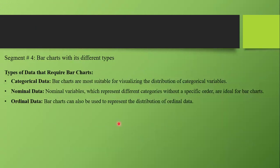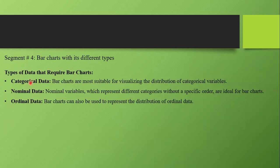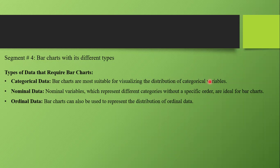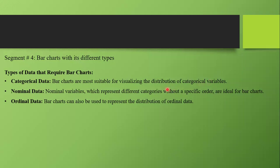Next is the type of data that requires bar charts. There are three types: categorical data, nominal data, and ordinal data. You should not use bar charts for continuous data. Bar charts are suitable for visualizing the distribution of categorical variables, for example, when we have age groups with multiple categories.